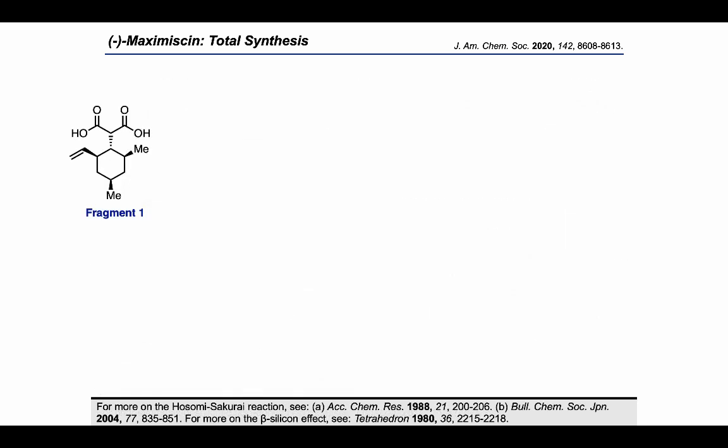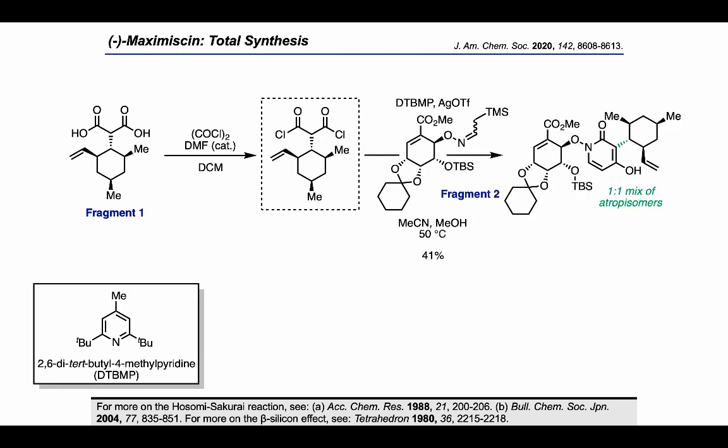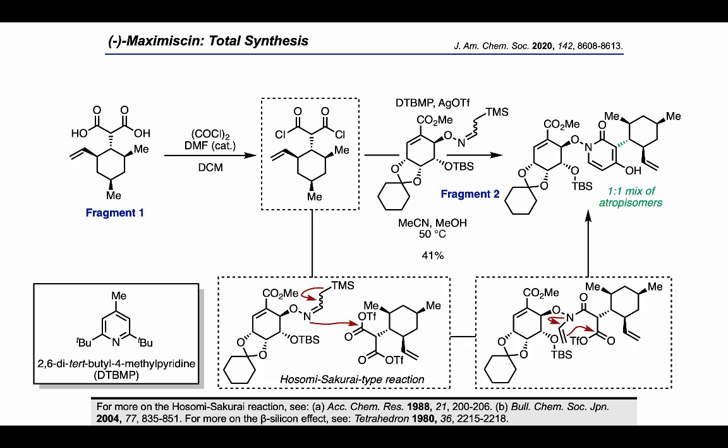To get the fragments together, they took Fragment 1 and activated it as the diacyl chloride, then introduced it to Fragment 2 along with silver triflate. This allowed them to activate the electrophile further as the diacyl triflate, which could be attacked in homo-Mukaiyama fashion with Fragment 2. After acylating on one side with the nitrogen, the amine resulting from TMS cleavage was used as a nucleophile to attack the other acyl triflate and close up the pyridone ring. This product existed as a one-to-one mix of atropisomers due to hindered rotation around the bond marked in green.